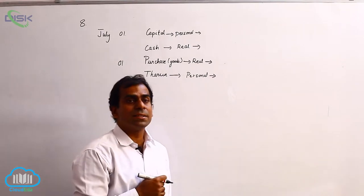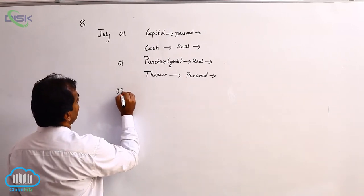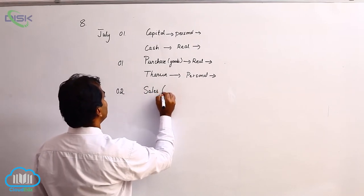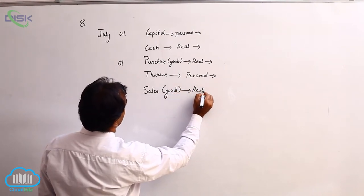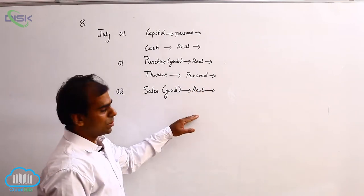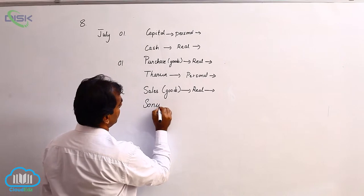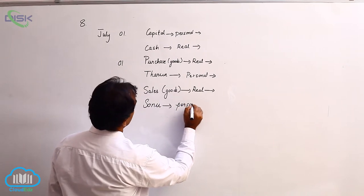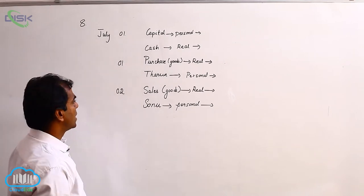Next, on the second date: sold goods to Sonu. Here again we have goods, which is a real account, and we will refer to it as sales because we are selling the goods. Apply the rule — debit if goods are coming in, credit if they are going out. We sold the goods to Sonu, and being a credit transaction, Sonu is a person, therefore a personal account. You decide whether to debit or credit Sonu.